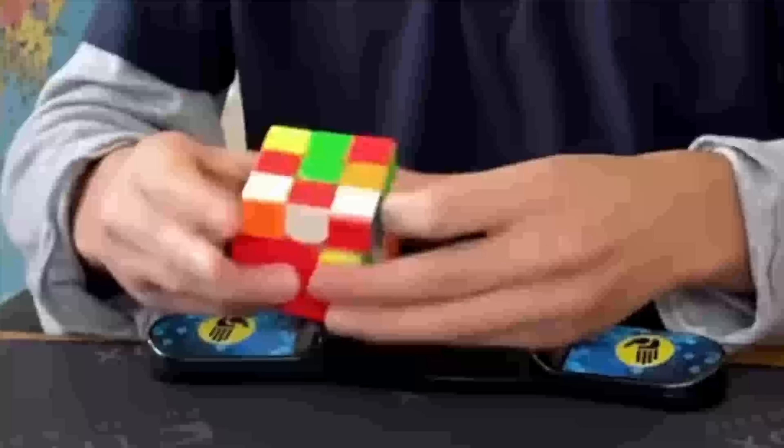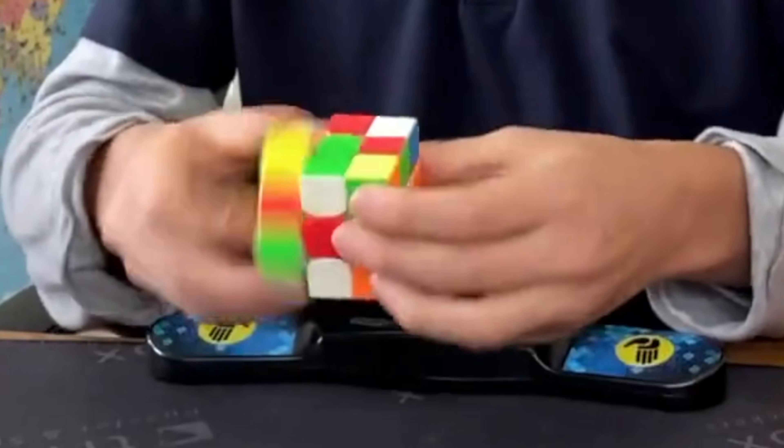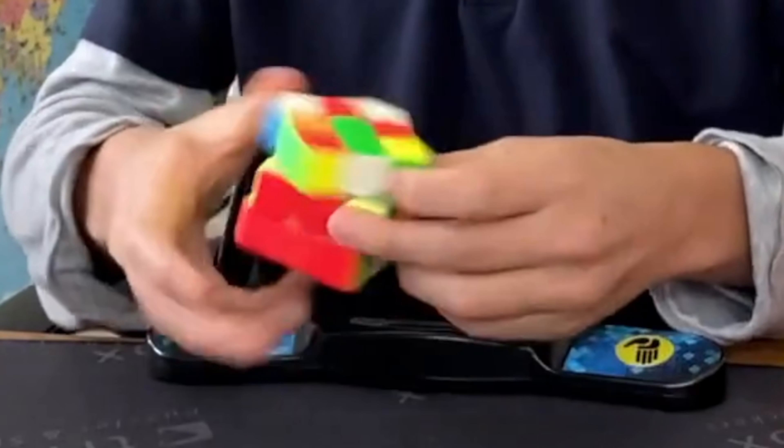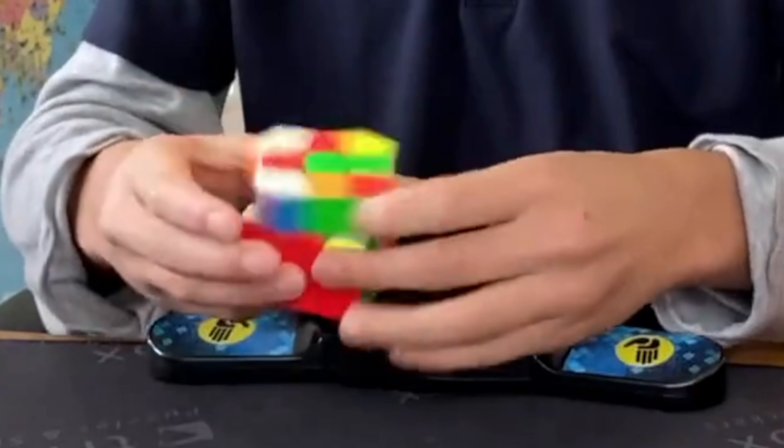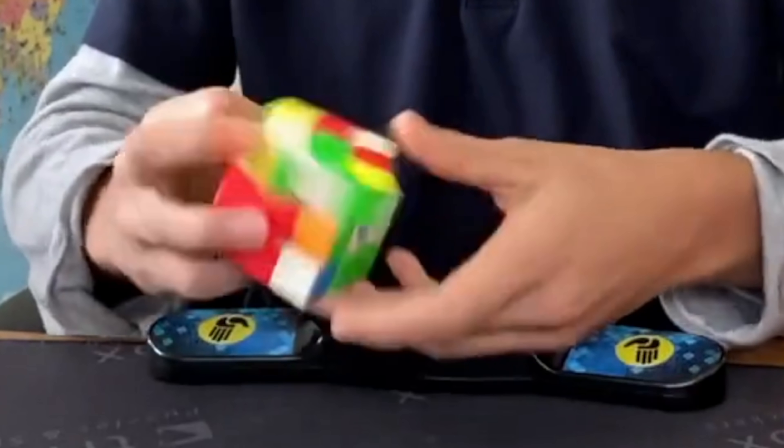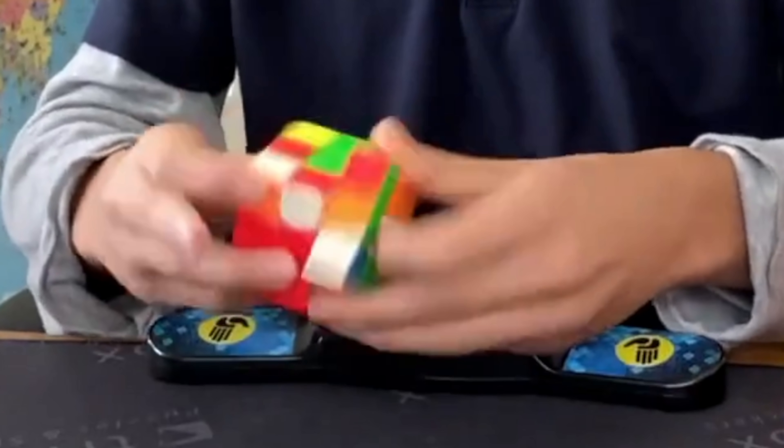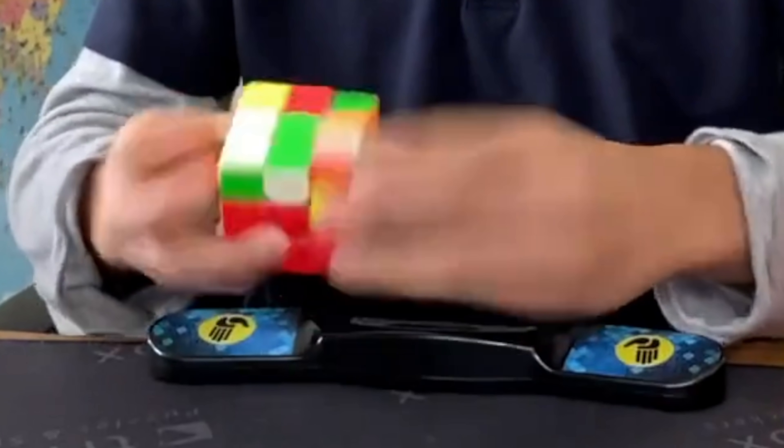Sometimes a hard transition to make from cross, or in this case double x-cross, to third F2L pair, but he does it very smoothly. Notice the alternating hands: left hand into right hand double flick, using that right hand for the U moves.